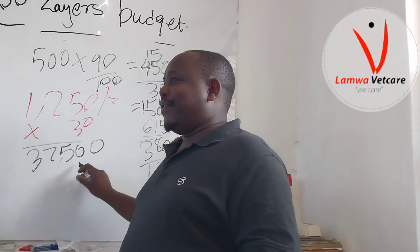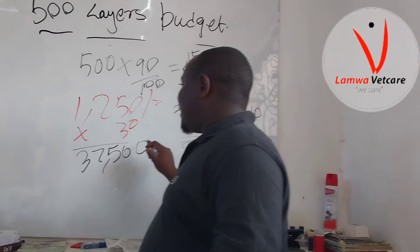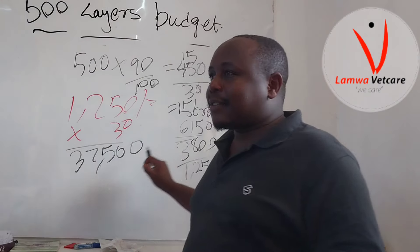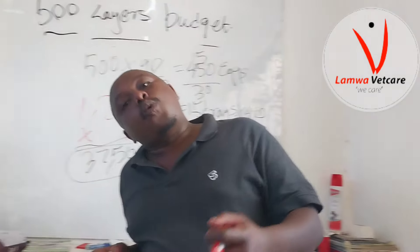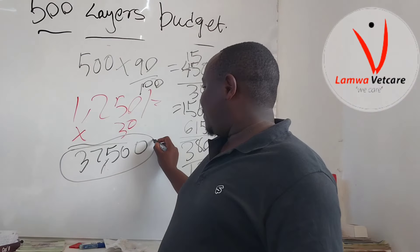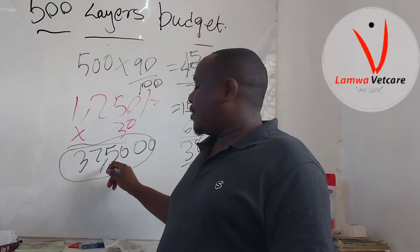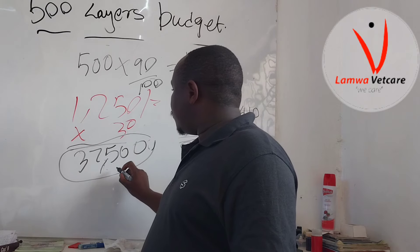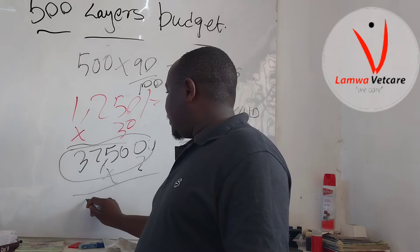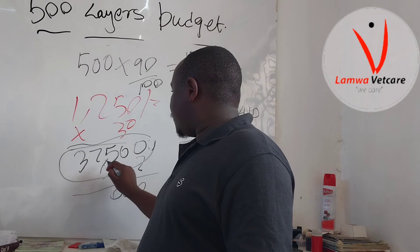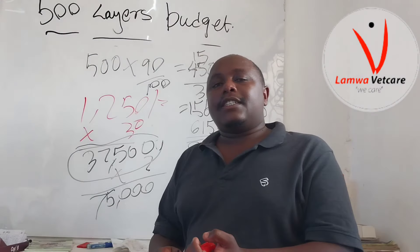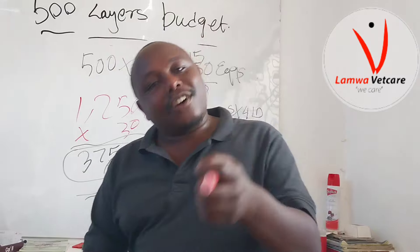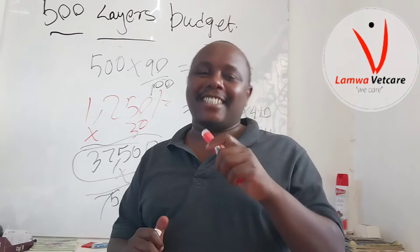At 1,250 shillings times 30 days, if you administer your birds layers mash, at the end of the month at 90 percent production your total profit will be 75,000 Kenyan shillings. If you have a bigger number like 1,000 birds, just add another zero and multiply by two — which will give you a higher return. Don't forget to like, share, and comment, and see you on our next episode.